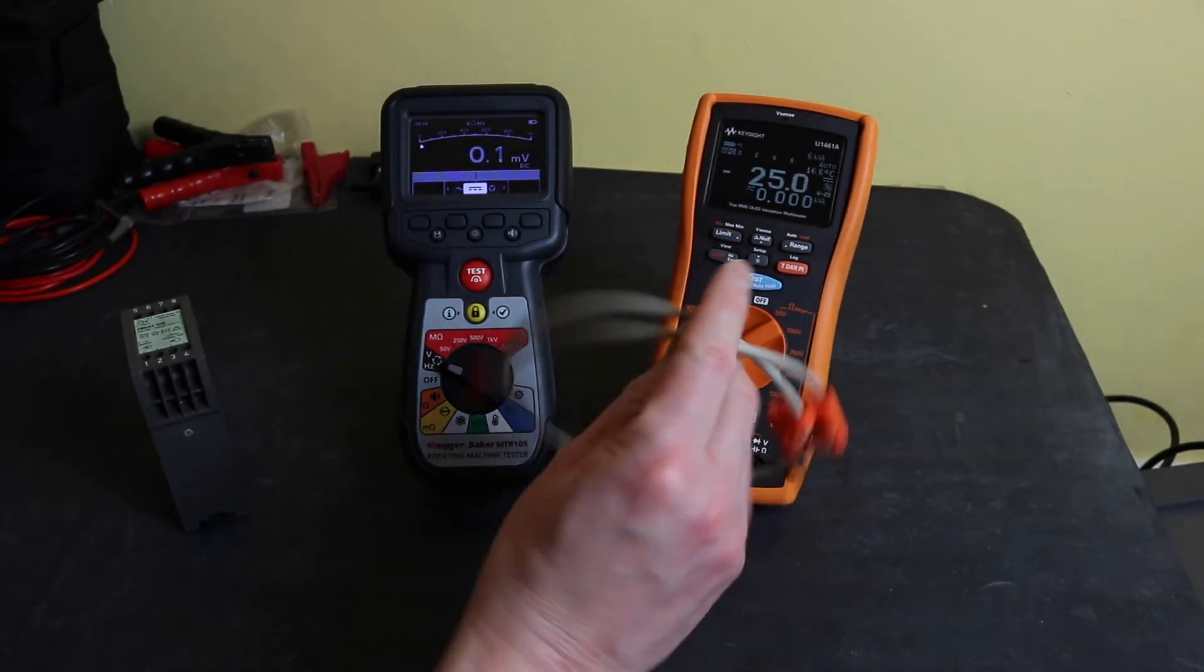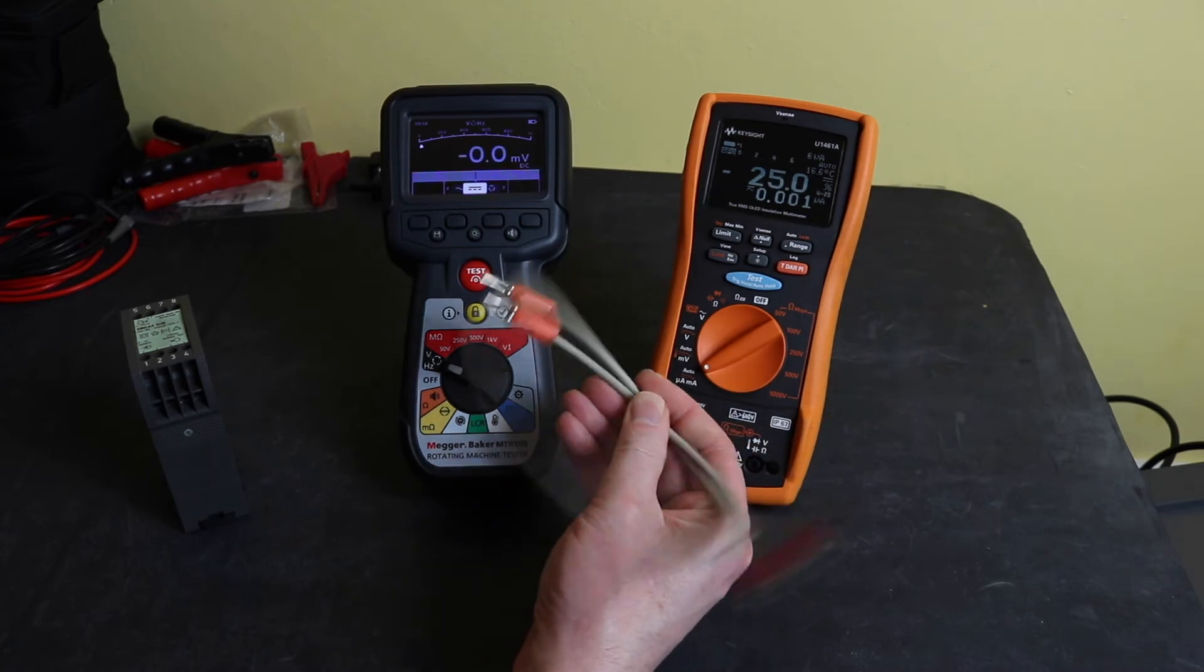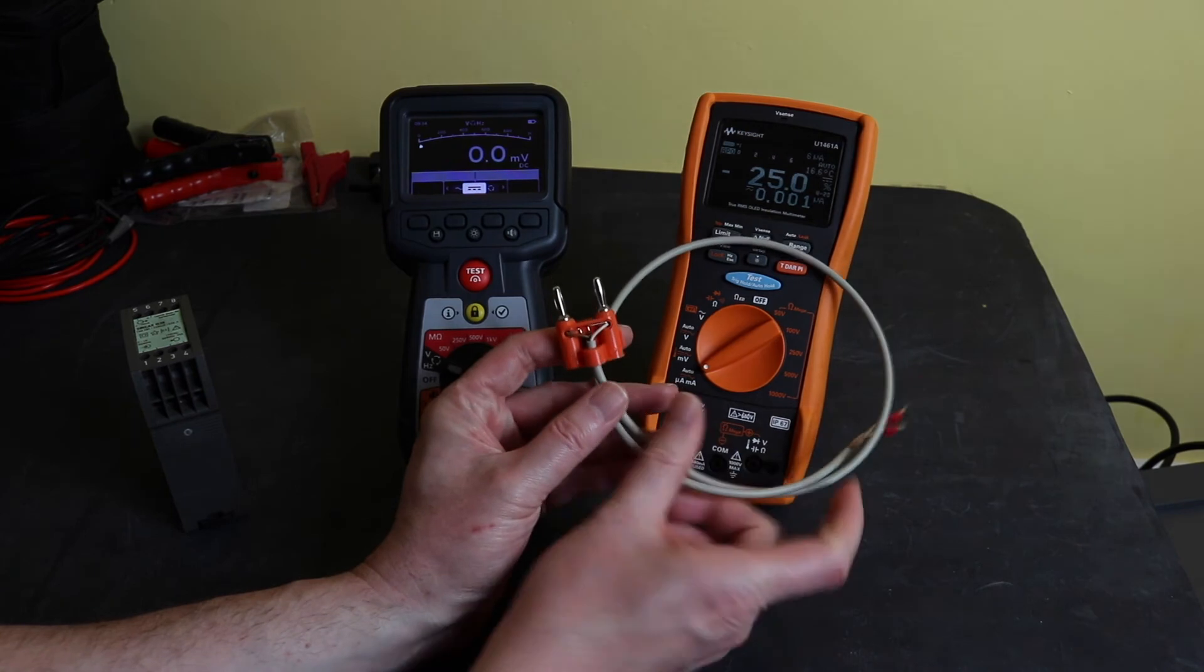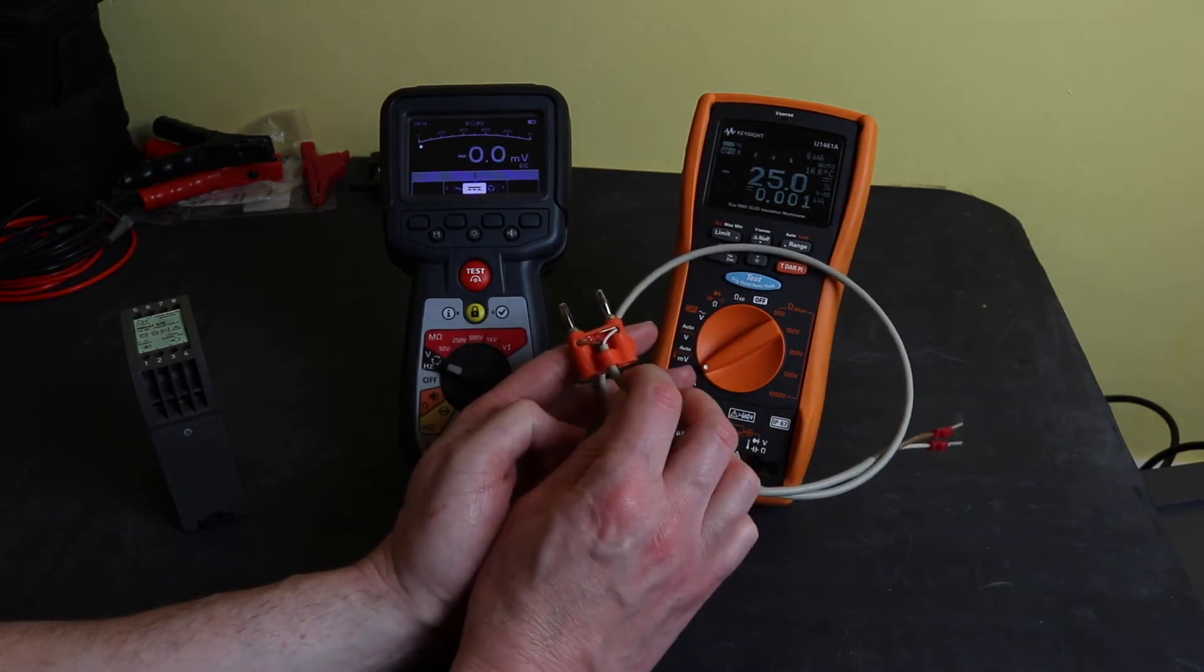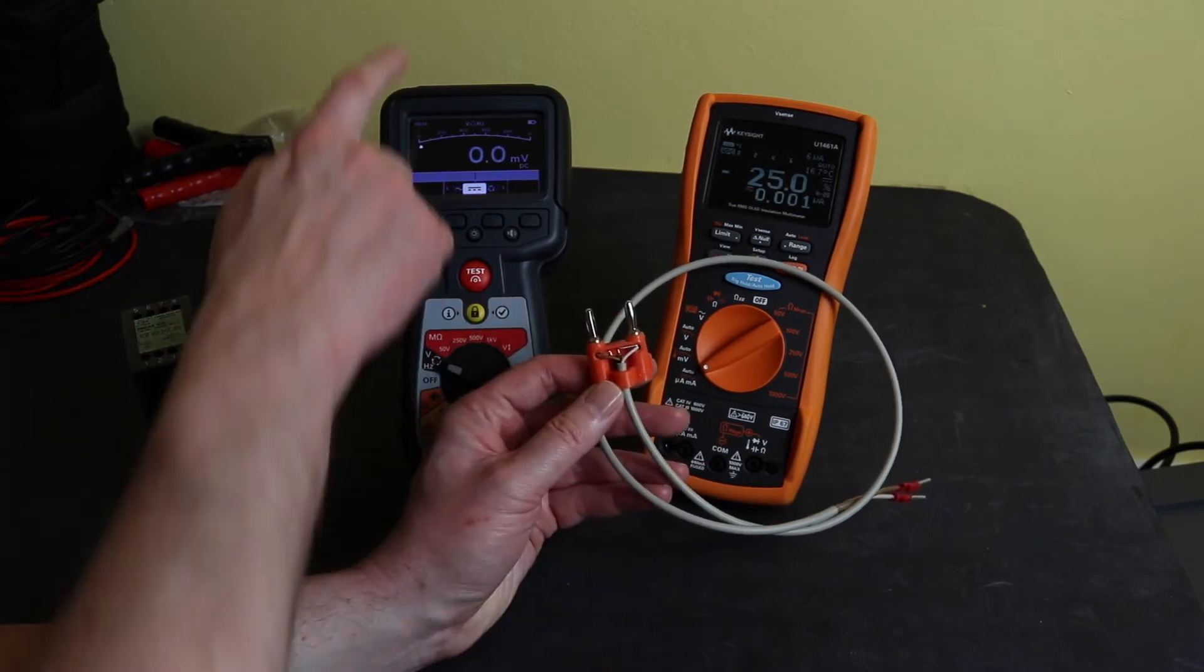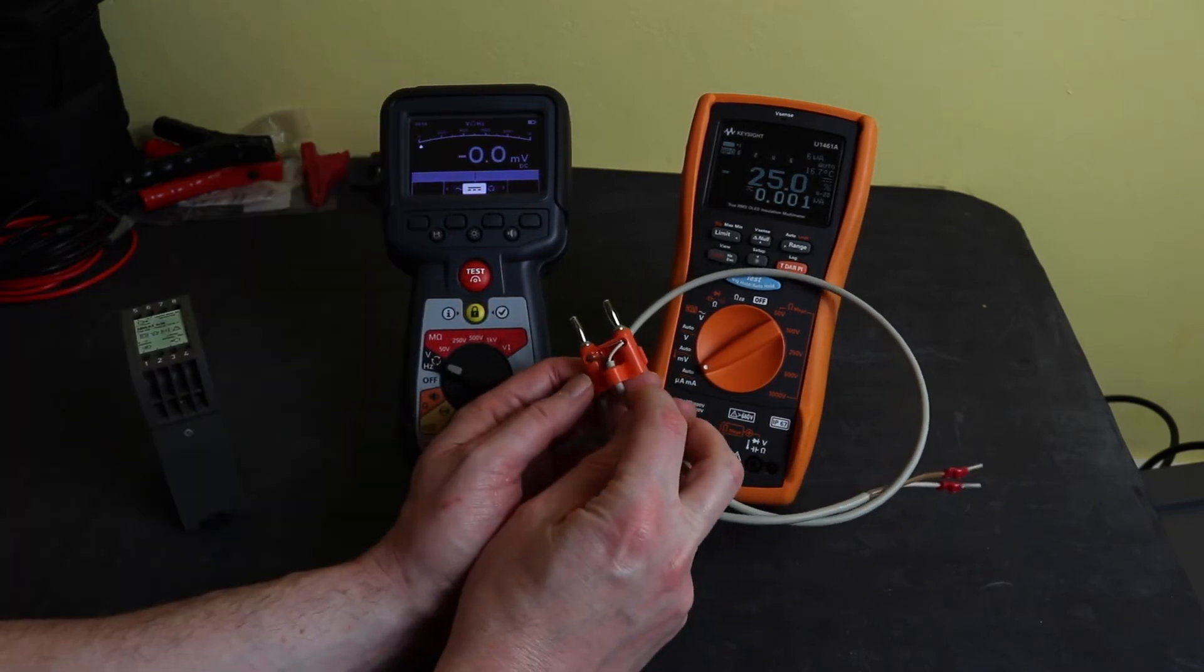To help me do that, I've made this little test lead up. This is a little Pomona stackable jack here. Standard 19 millimeter slash three-quarter inch space in between the two pins that will plug straight into the top of the MTR105.